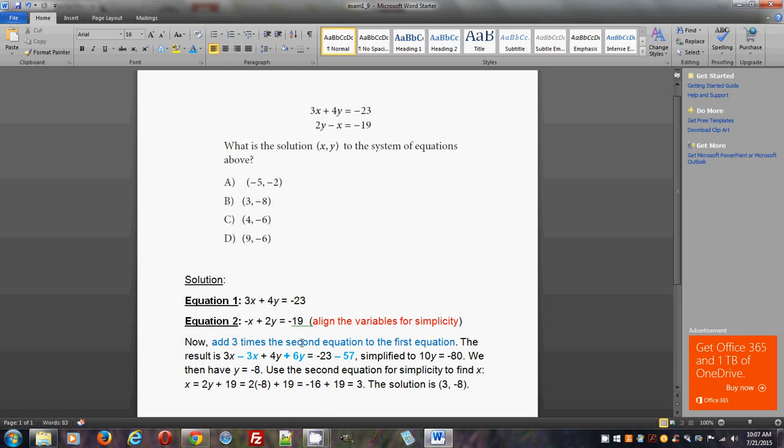So adding three times the second equation to the first equation. That's the first thing you do. Now, the result is 3x. So after we multiply the second equation by three, we will add. And why are we adding? Because there's already a negative here. So if you add three and then negative three here, it will be zero.